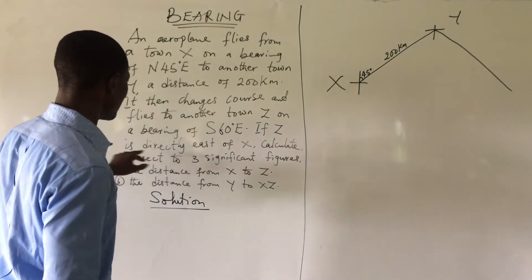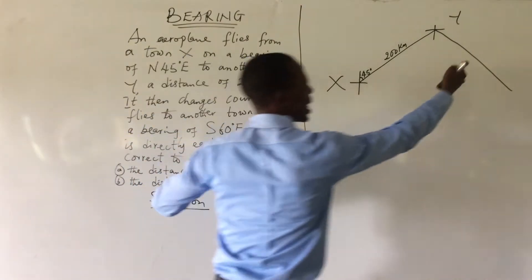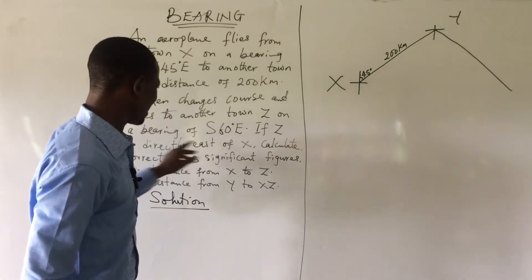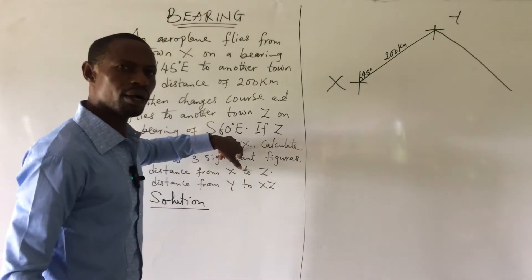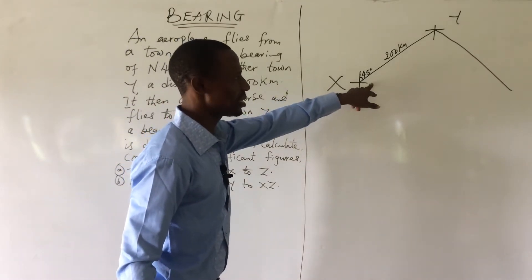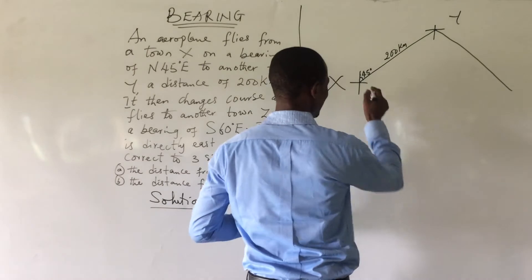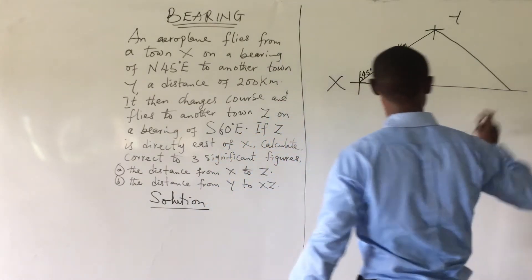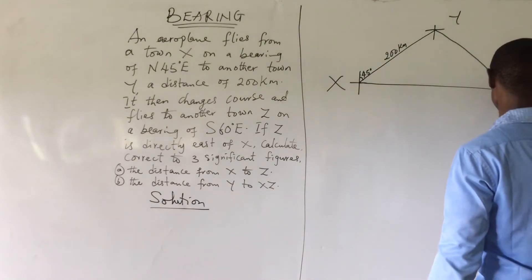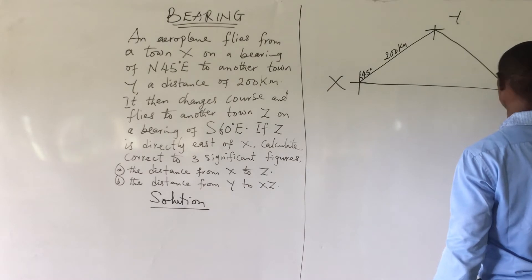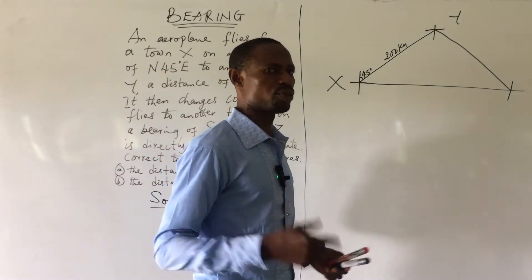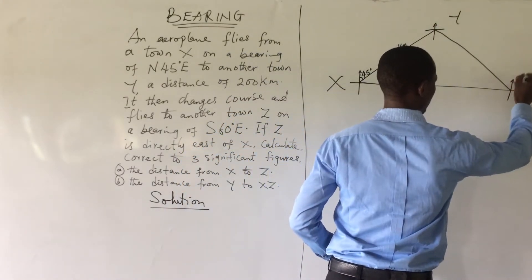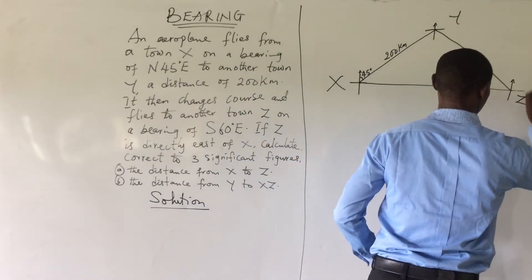We now go back to the question. It says if Z is directly east of X. Town Z is the third town. They are saying that Z is directly east of X. Look at town X. This is the east of town X. We are to extend this line because they say directly. We are to extend this line to meet with this other line. Here, you also introduce your four cardinal points and this is town Z.